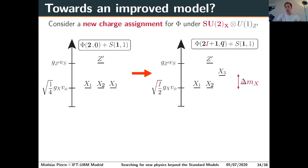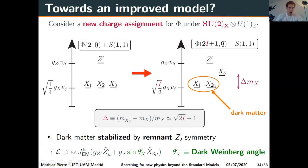In follow-up work, we generalize the model by changing the scalar representation under SU(2) to a higher-dimensional representation of dimension 2j+1. This creates a mass splitting between the third component X_3 of the SU(2) gauge fields and the first two X_1, X_2, which become the dark matter candidates. X_3 slightly mixes with the Z' boson. The mass splitting delta can be written directly as a function of the scalar representation, and the dark matter remains stable via a remnant Z_2 symmetry from the gauge symmetry.